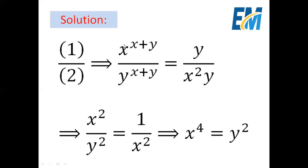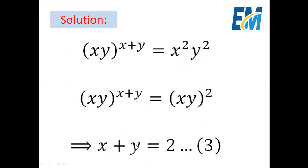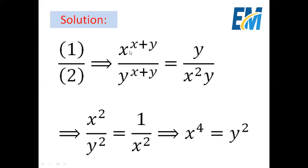Remember that x and y are different from zero, so we can divide equation one by equation two. This gives x to the power x plus y over y to the power x plus y equals y over x squared y. Here we can simplify y to get one over x squared. The left-hand side can be written as (x over y) squared, or x squared over y squared. Because x plus y equals two from the third equation, we write two in place of x plus y, giving x squared over y squared equals one over x squared.